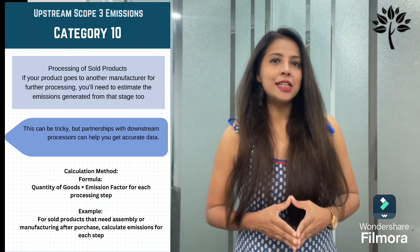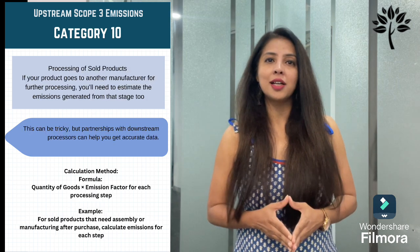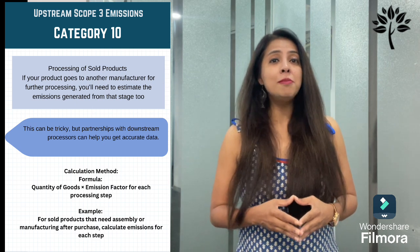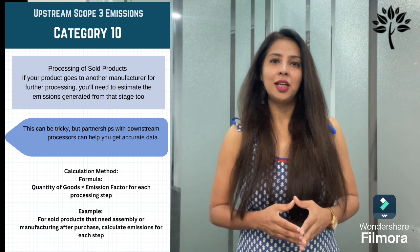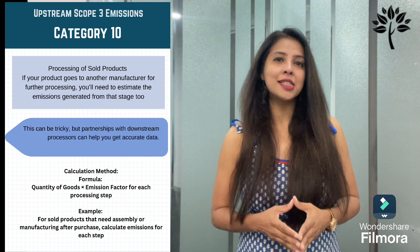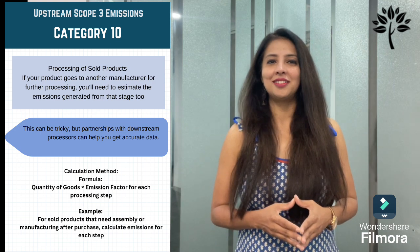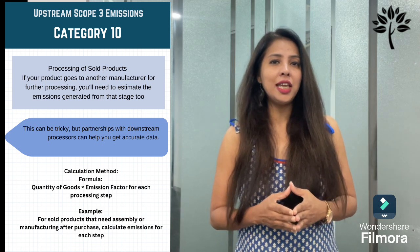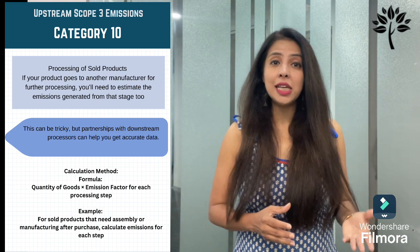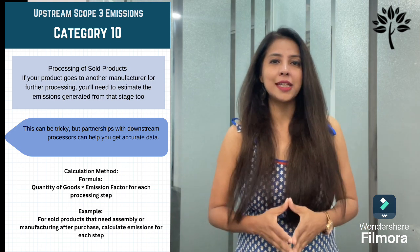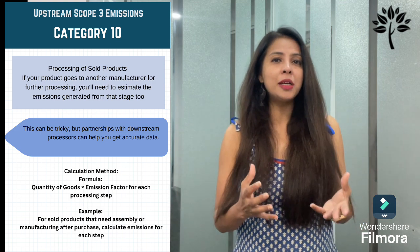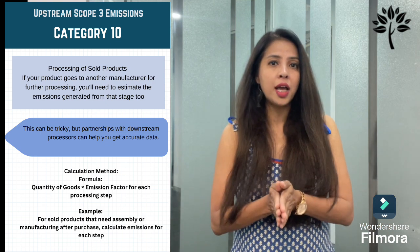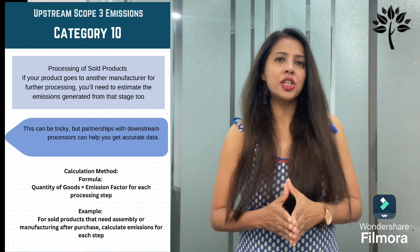Category 10 is processing of sold products. If your product goes to another manufacturer for further processing, you need to estimate the emissions generated from that stage too. This can be tricky, but partnerships with downstream processors can help you get accurate data. The calculation method is based on quantity of goods requiring further processing, with emission factors based on typical processing methods for the product type. For sold products that need assembly or manufacturing after purchase, calculate emissions for each step.